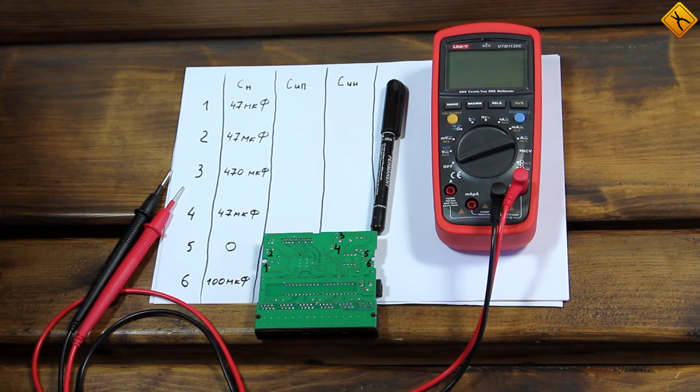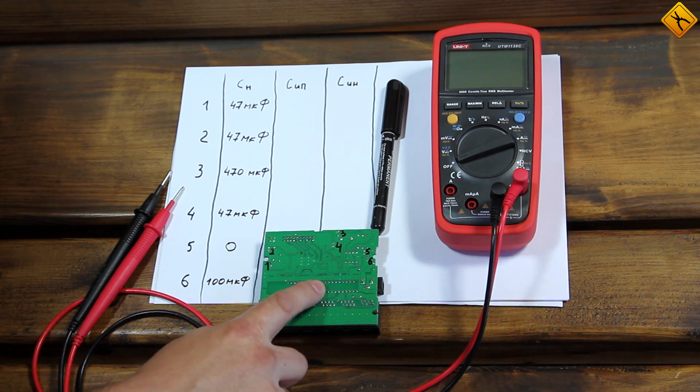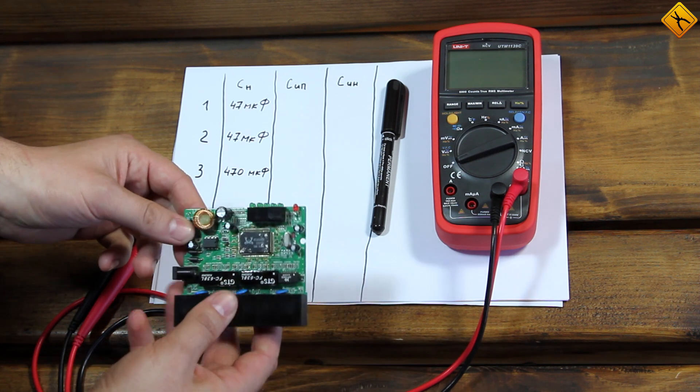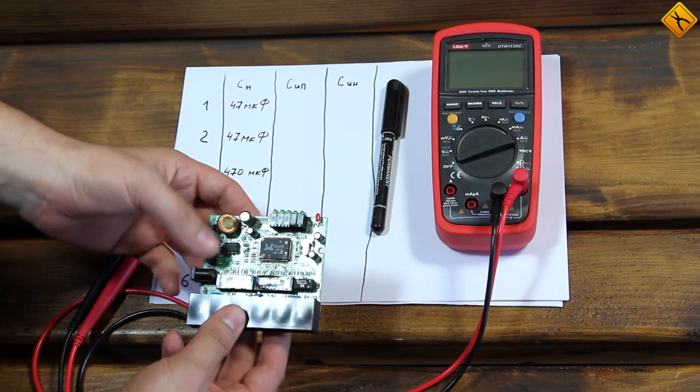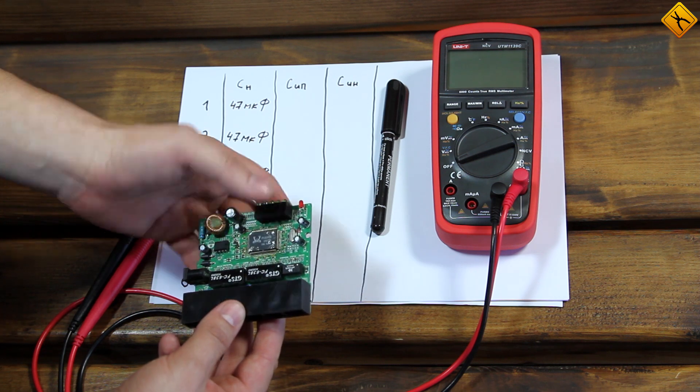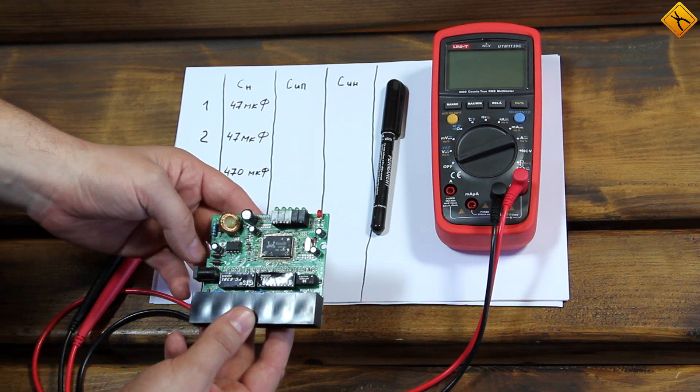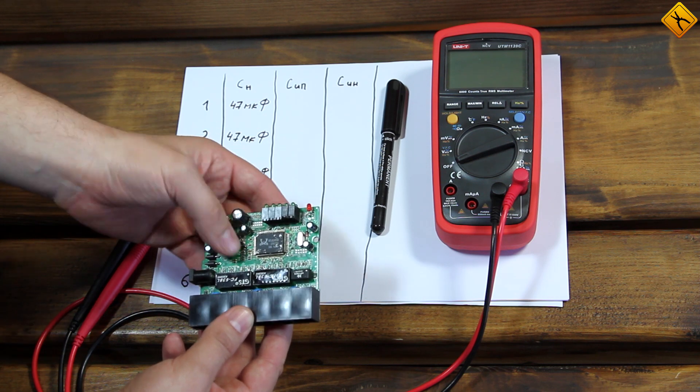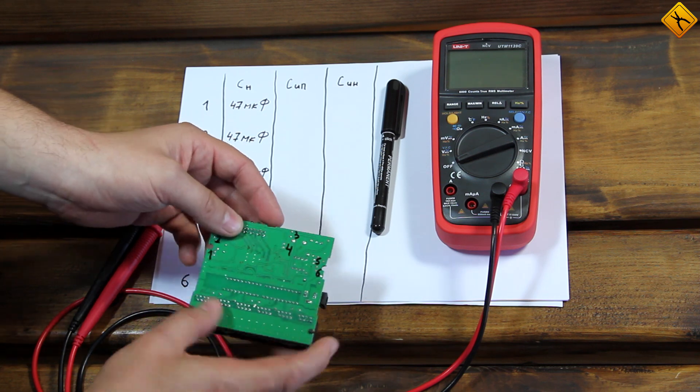We will conduct an experiment with a number of different measurements on this PCB. As you can see, it has many different components. Electrolytic capacitors, SMD capacitors, inductors, resistors, microchips, light-emitting diodes, it has the works.